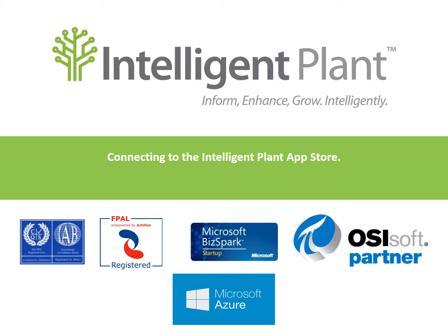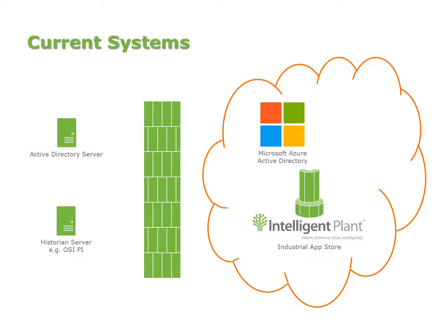This is a quick video to describe how App Store Connect works. Usually a company will have two systems entirely: an Active Directory server and a Historian server or a data source that we can take data from. There are two things that exist in the cloud that we can use: Microsoft Azure Active Directory and the Intelligent Plants Industrial App Store.